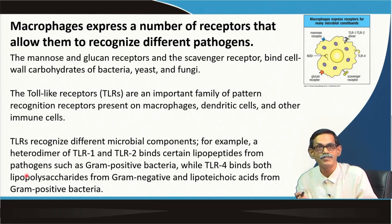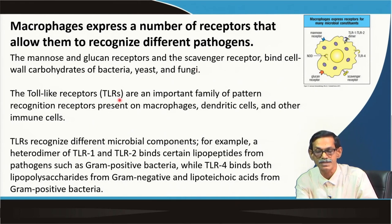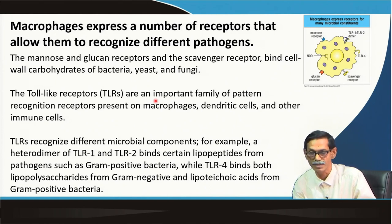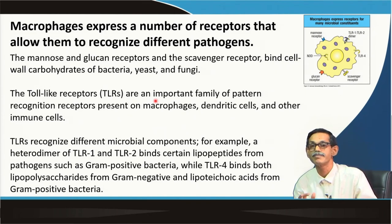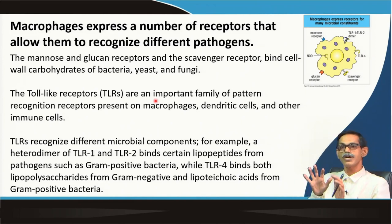What are these receptors doing? The mannose and glucan receptors and the scavenger receptors bind cell wall carbohydrates of bacteria, yeast, and fungi. The toll-like receptors — the TLRs — are an important family of pattern recognition receptors present on macrophages, dendritic cells, and other immune cells. For example, the heterodimer of TLR1 and TLR2 binds certain lipopeptides from gram-positive bacteria, while TLR4 binds lipopolysaccharides from gram-negative bacteria and lipoteichoic acid from gram-positive bacteria.